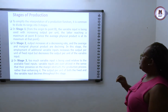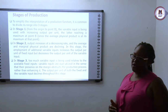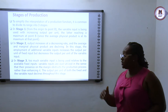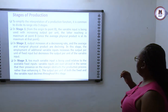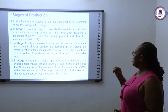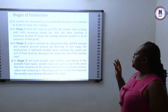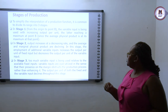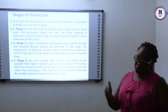Stages of production: to understand production in economics, it is better to specify it in stages — stage one, stage two, and stage three. In stage one, the variable inputs being used increase output per unit. The variable input use increases output regularly.